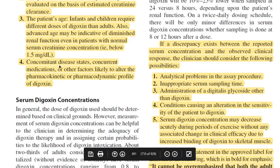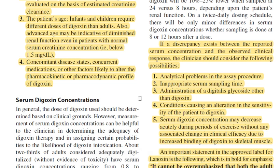The fourth factor is concomitant disease states. For example, if the patient already has renal disease, the dose must be reduced proportionally. If hepatic function is compromised, or if any disease causes electrolyte imbalance, this is also important because digoxin's effect is closely related to electrolyte levels. If the patient develops hypokalemia due to electrolyte imbalance from another disease, the sensitivity to digoxin increases and digoxin toxicity can occur.